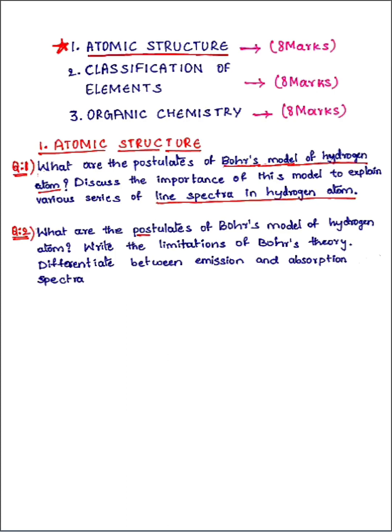The second question is: what are the postulates of Bohr's model of hydrogen atom, write the limitations of Bohr's theory, and differentiate between emission and absorption spectrum? This is also very important. Half of the answer — the Bohr's model of hydrogen atom part — is the same as for the first question. Additionally, you need to learn the limitations of Bohr's theory and the differences between emission and absorption spectrum.